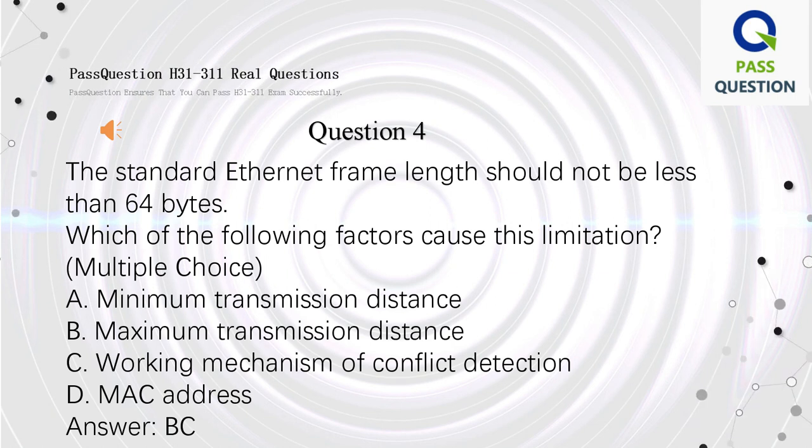Question 4. The standard Ethernet frame length should not be less than 64 bytes. Which of the following factors cause this limitation? Multiple choice. A. Minimum transmission distance. B. Maximum transmission distance. C. Working mechanism of conflict detection. D. MAC address. Answer: B, C.